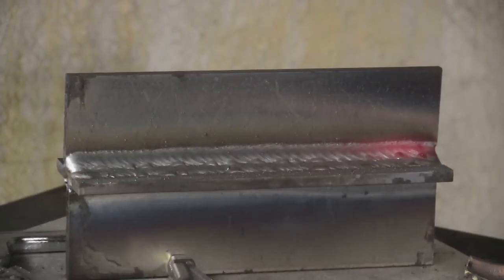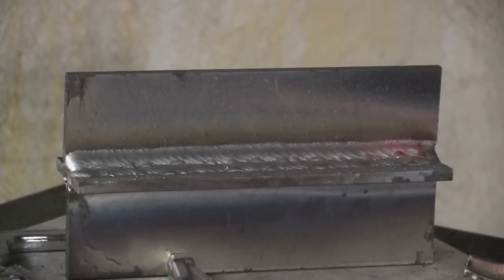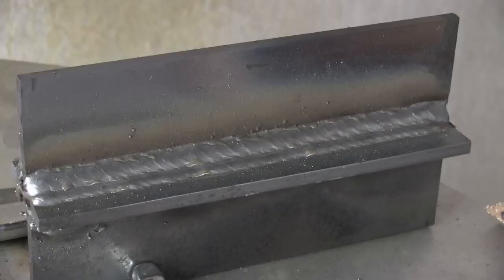And you also want to keep an eye on that top toe of the weld. Make sure you don't leave any undercut. At the same time, you're trying to overlap that bottom bead by about half. Now you can see it was red hot there, so now would be time to let it cool off, maybe dunk it in a quench bucket, something like that.